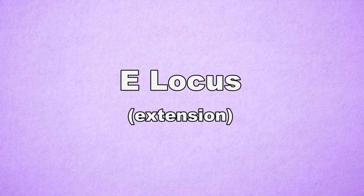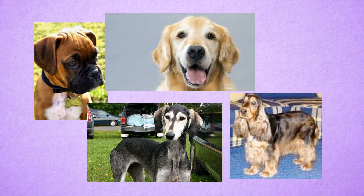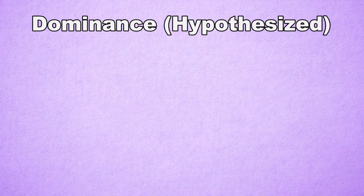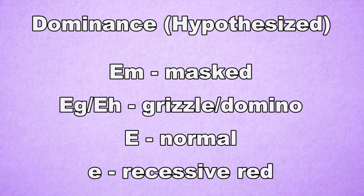E stands for extension and the E locus is responsible for almost all non-agouti related eumelanin and pheumelanin patterns. The E locus determines which area of the coat can produce eumelanin and which can produce pheumelanin. The dominance in the E locus isn't known for sure yet, and there may be alleles that have not been discovered yet. Currently the theory of dominance is Big E-M which is mask, Big E-G and Big E-H which is grizzle and domino, Big E which is normal extension, and little e which is recessive red.